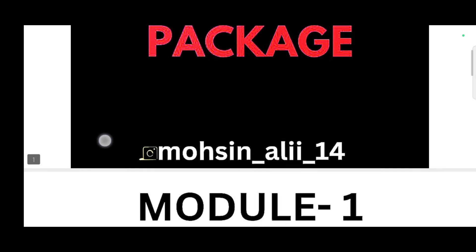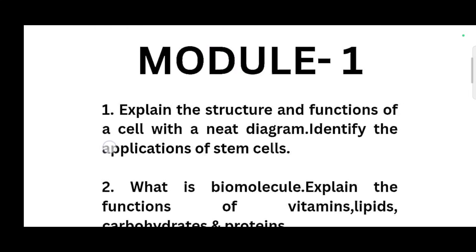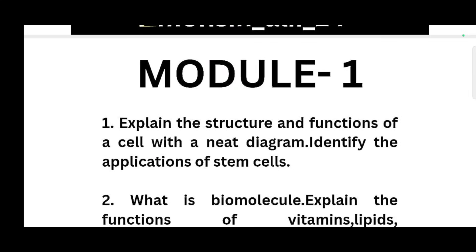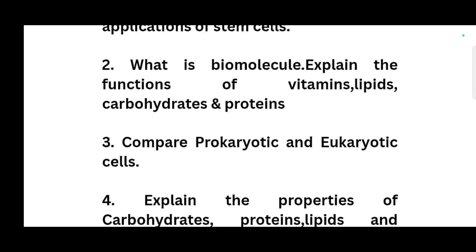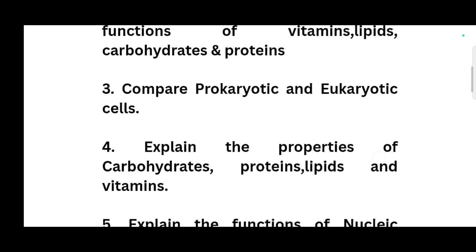Now let me discuss the passing modules. In Module 1, the super important questions are: explain the structure and functions of a cell with a neat diagram; identify the applications of stem cells — the main focus should be on the diagrammatic part and the application part. Next: what is a biomolecule — explain the functions of vitamins, lipids, carbohydrates, and proteins; compare prokaryotic and eukaryotic cells.